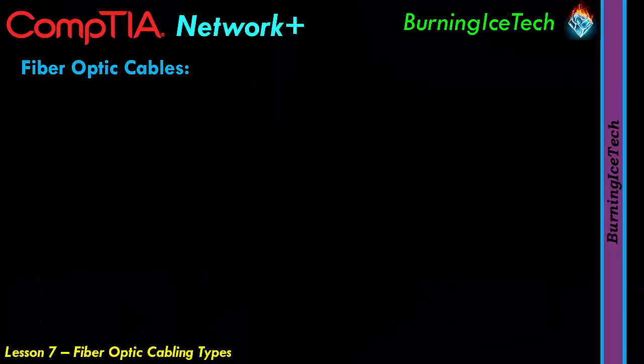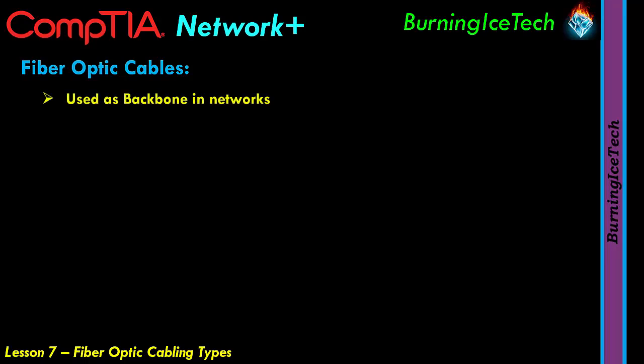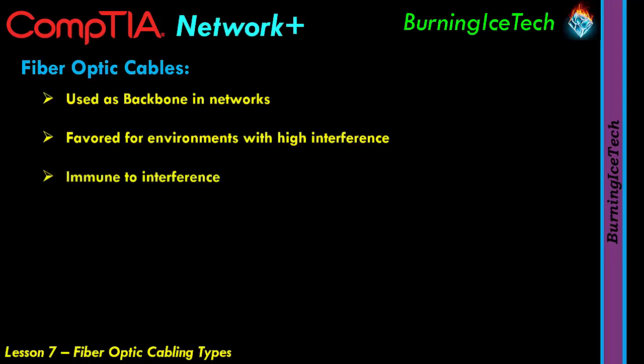These cables are often used as the backbone in networks — in other words the main cable — and they're also normally favored in environments where there tends to be high interference, things like EMI. Now unlike copper cables, fiber optic cables are actually immune to interference because they work with light, where copper cables work with electrical signals, so they differ day and night.